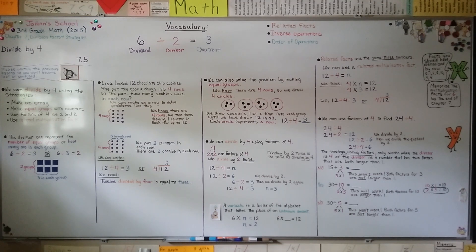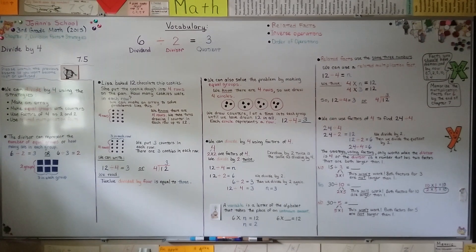We can divide by 4 by making an array, by making equal groups with counters, we can use related multiplication facts, but we can also use factors of 4 as 2 and 2. When we use the factors of 4 as 2 and 2, we have to divide by 2 twice.